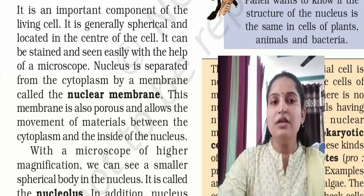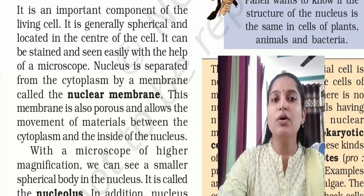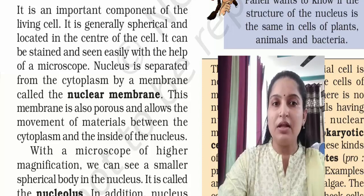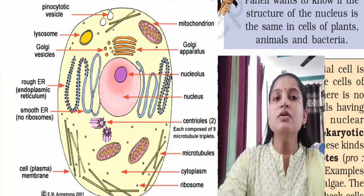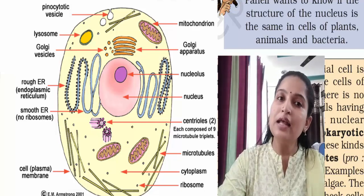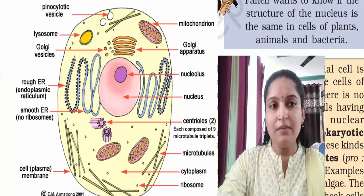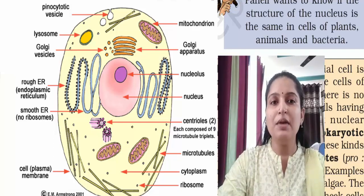The nuclear membrane separates the nucleus from the cytoplasm — just as the cell membrane separates one cell from another, the nuclear membrane separates the nucleus from the cytoplasm. Every cell has a nucleus inside it. This nuclear membrane is also porous and allows movement of materials between the cytoplasm and the inside of the nucleus.